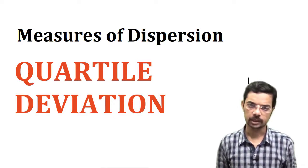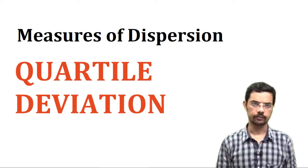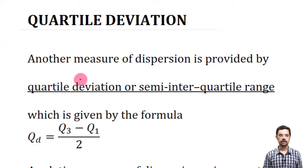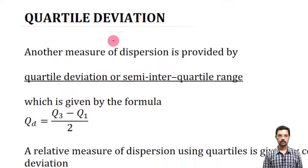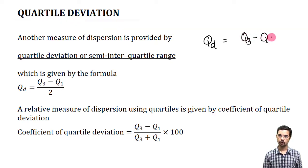In this class, we shall be discussing quartile deviation and some of its properties along with some problems. Quartile deviation is given by QD = (Q3 - Q1) / 2, where Q3 is the third quartile and Q1 is the first quartile.